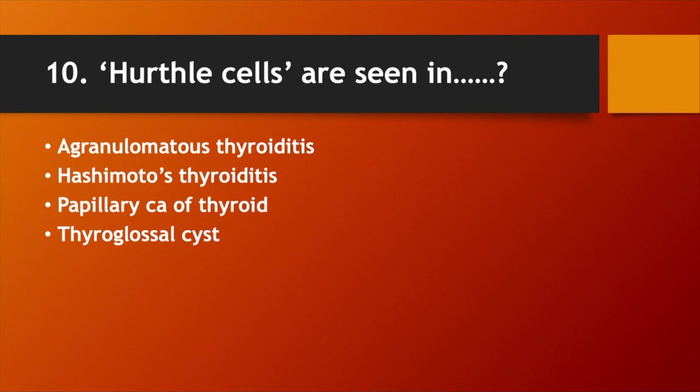Hurthle's cells are seen in: Option A. Granulomatous thyroiditis. Option B. Hashimoto's thyroiditis. Option C. Papillary carcinoma of thyroid. Option D. Thyroglossal cyst. Answer: Option B. Hashimoto's thyroiditis.